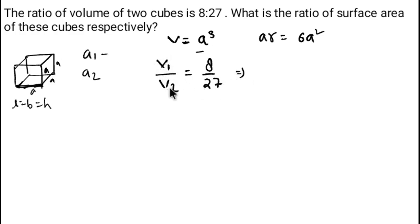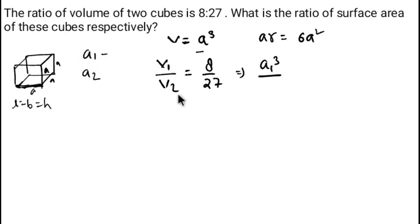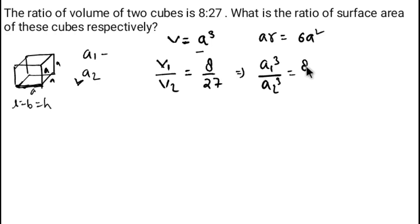The volume of the first cube is a₁³, since its side length is a₁. The volume of the second cube is a₂³, since its side is a₂. So we have a₁³ over a₂³ equals 8/27.